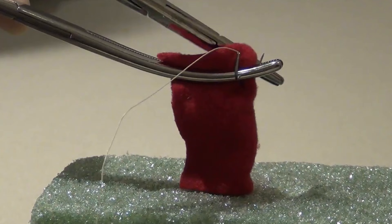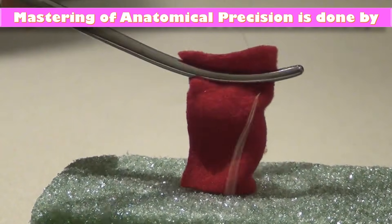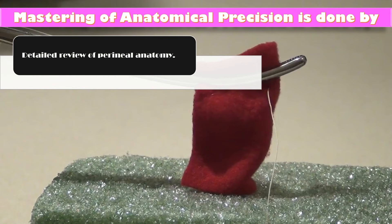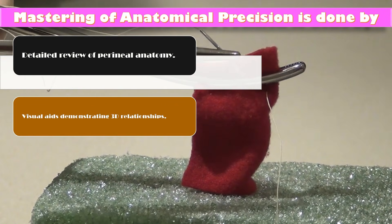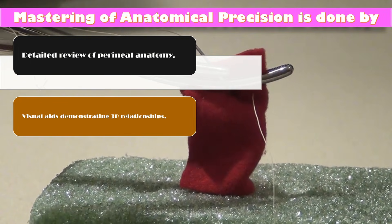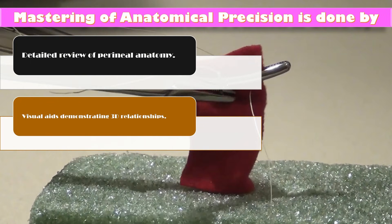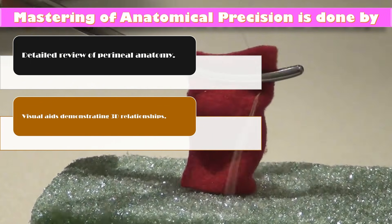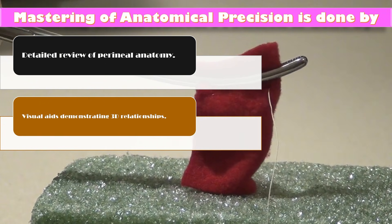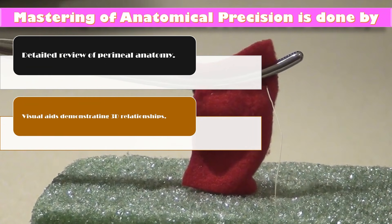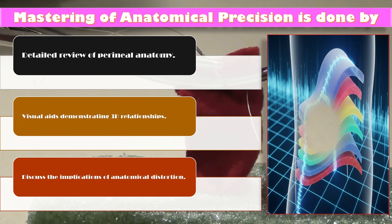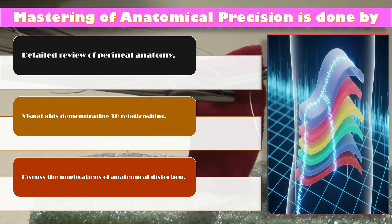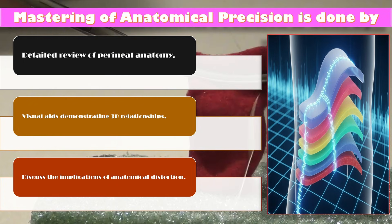Mastering anatomical precision involves a detailed review of perineal anatomy relevant to complex laceration, focusing on layers of tissue. Visual aids demonstrate the 3D relationship of muscles and fascia, which is crucial for accurate tissue approximation. The implications of anatomical distortion from previous trauma or scar tissue on repair strategy are also discussed.